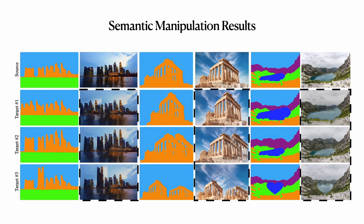Our method enables semantic manipulation of images through their segmentation maps. We can either move, resize, or remove instances in the source segmentation map to obtain the target layout. Our method produces quality results with arbitrary semantic changes while the local appearance of the changed instance is well preserved.